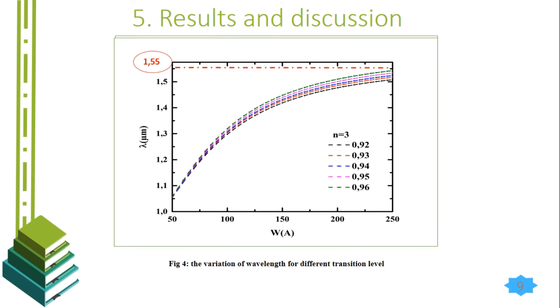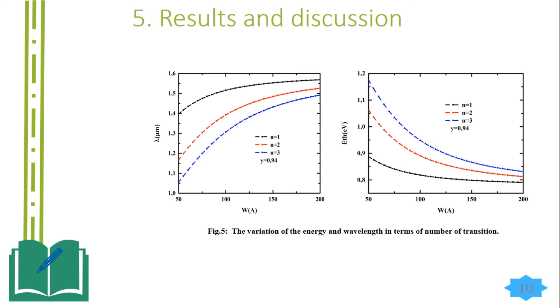We notice that for the second and third transitions, the wavelengths converged to less than 1.55 micrometers. But for the first transition, the difference between two successive fraction moles is clear and they all pass through 1.55, which appears in figure 5.